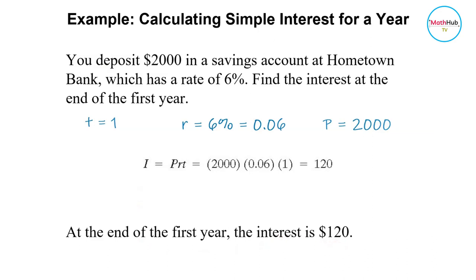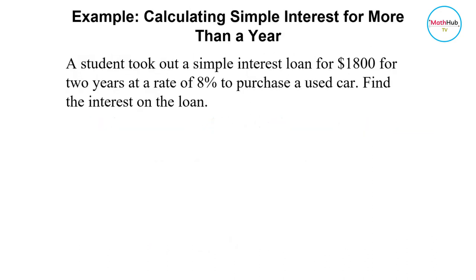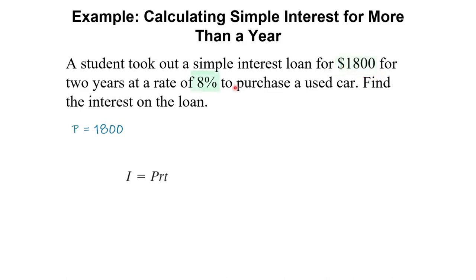The interest at the end of the first year is one hundred twenty dollars. In the next example, we compute interest for more than one year. We still follow the same formula: I equals PRT, where P stands for principal, R is for rate, and T is for time. A student took out a simple interest loan for one thousand eight hundred dollars for two years at a rate of eight percent to purchase a used car. Find the interest on the loan. P, the principal or amount borrowed, is one thousand eight hundred.